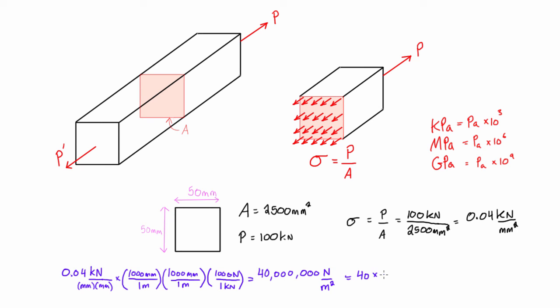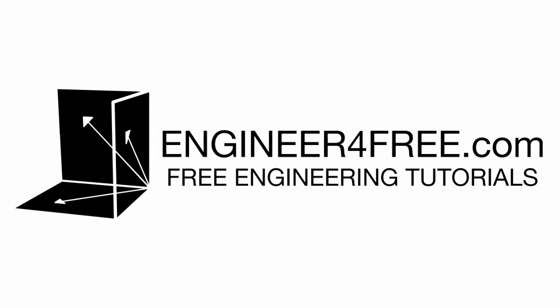So we have 40 times 10 to the 6 pascals, which is also equal to 40 megapascals. Sometimes you might be asked to give your answer in kilopascals or gigapascals, so we could just make that conversion. This would be—divide this by a thousand—we would get 0.04 gigapascals. Or if you go the other way, multiply by a thousand, then this would also be equal to 40,000 kilopascals. But for this problem, the most sensible answer to give would be saying that the normal stress inside this member here is equal to 40 megapascals.